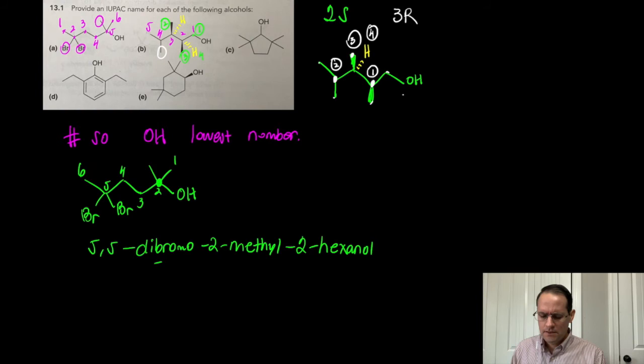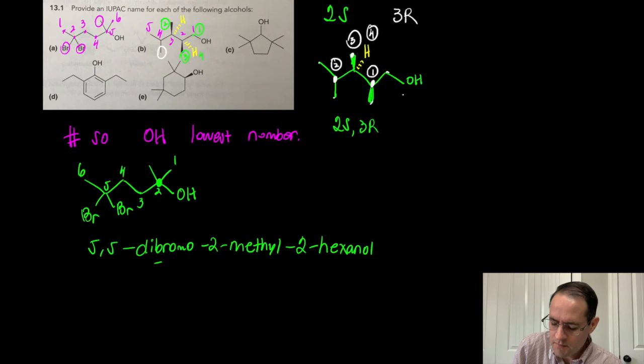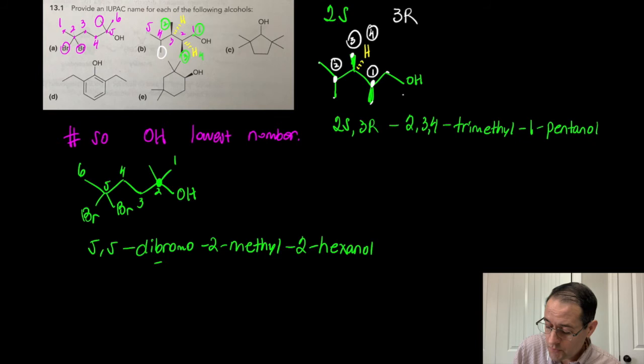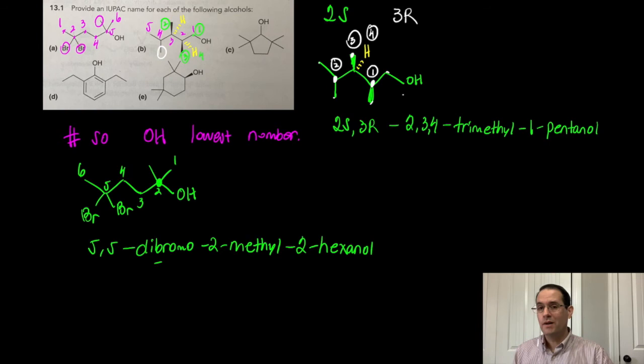The methyl group at carbon 4 is not at a stereogenic center. So the name is (2S,3R)-2,3,4-trimethyl-1-pentanol. The hydroxyl group is at carbon 1, and five carbons is pentane, so it's essentially 1-pentanol with three methyl groups and two stereogenic centers. That's as hard as it gets.